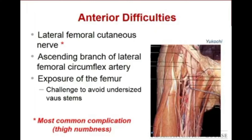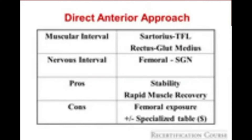Question writers love to test complications, particularly when it comes to surgical approaches. The lateral femoral cutaneous nerve is the most common nerve injury with the anterior approach to total hip arthroplasty, and this can result in thigh numbness. The ascending branch of the lateral femoral circumflex artery is also in play and can lead to significant bleeding if not cauterized during the exposure. Femoral exposure can be very challenging, potentially resulting in varus positioning of the stem or an undersized stem.